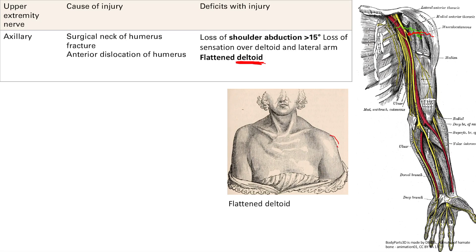You're also going to see a flattened deltoid. That happens because of muscle atrophy of the deltoid — so instead of a thick deltoid, it's going to be flat and weak.